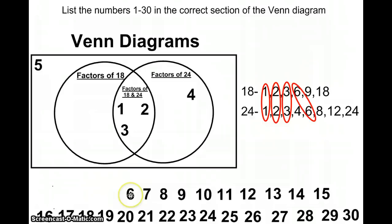If I go back to my list of 1 through 30, 6 is again a common number and it's the last common number. 7 is like 5, it's not a part of either so it goes outside. 8 is only a factor of 24.